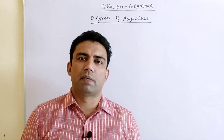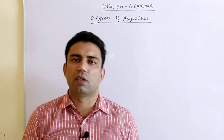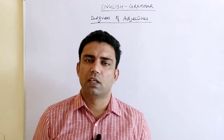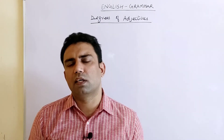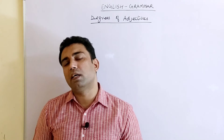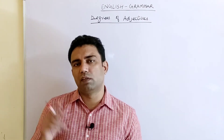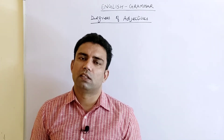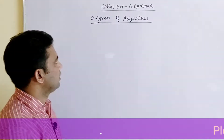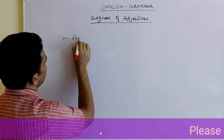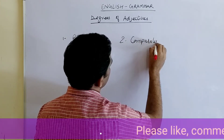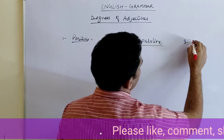Hello everyone, welcome back to our channel. In this video we will talk about degrees of adjectives. We have already done adjectives in the previous video. An adjective is basically a quality of a noun or quality of a pronoun. But whenever we compare the qualities of one person with another or one object with another, we need degrees of comparison. We have three types: positive degree, comparative degree, and superlative degree.